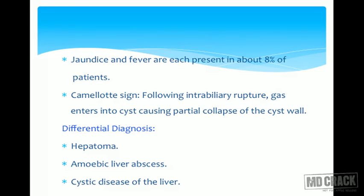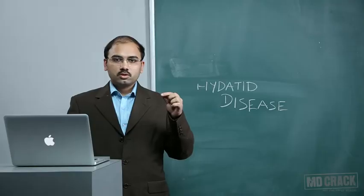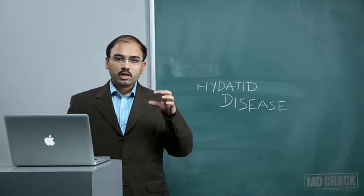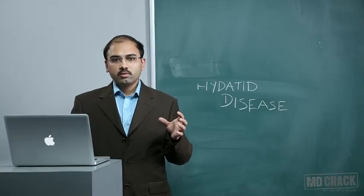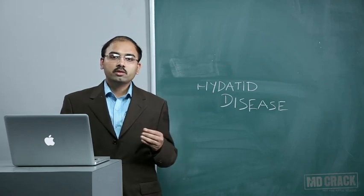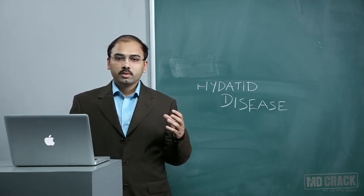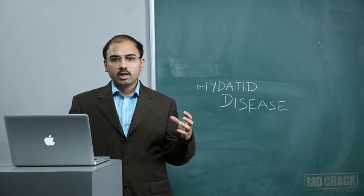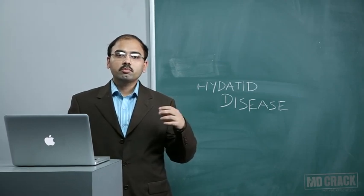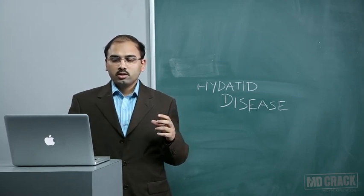There is a sign called the Camulet sign: following intrabillary rupture, gas enters into the cyst causing partial collapse of the cyst wall, which can be located on X-rays. The differential diagnosis includes hepatoma, amoebic liver abscess, and cystic disease of the liver. A patient may present with multiple cysts in the liver associated with primary multi-systemic involvement, or it may be an amoebic liver abscess with or without gas production, or hepatoma with cystic degeneration.